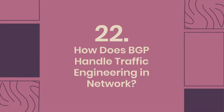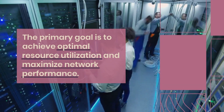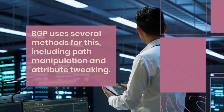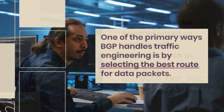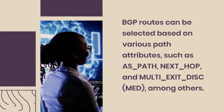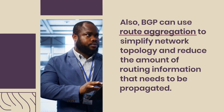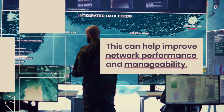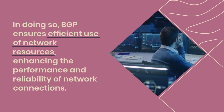How does BGP handle traffic engineering in a network? BGP manages traffic engineering by controlling the flow of data to achieve optimal resource utilization and maximize network performance. It uses methods including path manipulation and attribute tweaking. BGP selects the best route for data packets based on various path attributes such as AS_path, NEXT_HOP, and MED (multi-exit discriminator). BGP can also use route aggregation to simplify network topology and reduce routing information that needs to be propagated, improving network performance and manageability while ensuring efficient use of network resources.